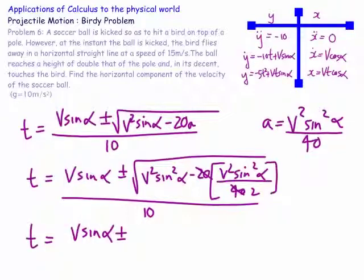You can see that the 20 will go twice into 40, giving a half.